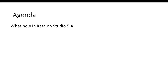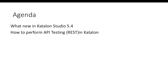Before starting, let's see what exactly we're going to cover in this video. We'll talk about what is new in Katalon Studio 5.4. If you're using a previous version, it's time to update to version 5.4.2, which has a new UI for API testing and many new features. We'll also see how to automate REST APIs — they also support SOAP, but SOAP we'll cover in upcoming videos.